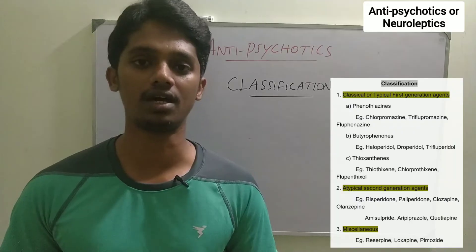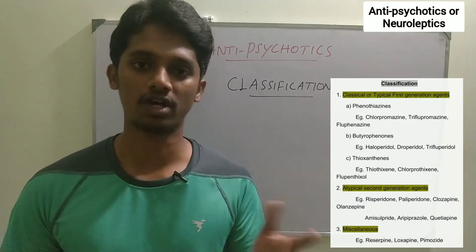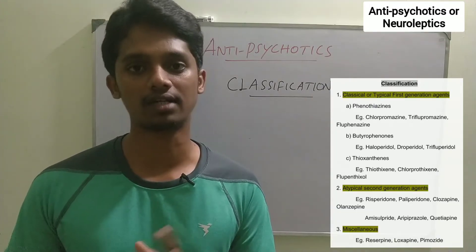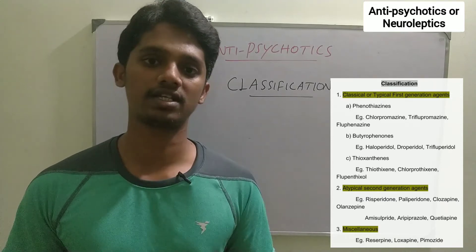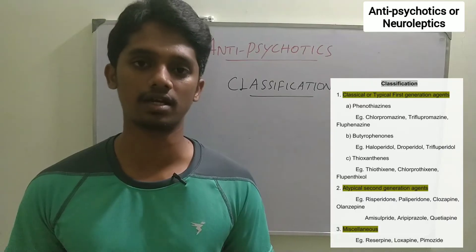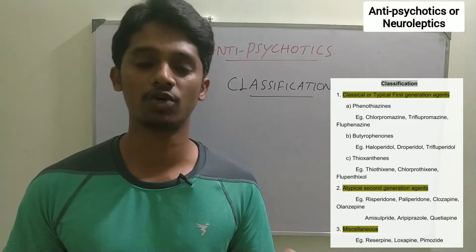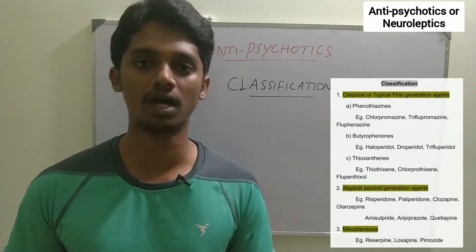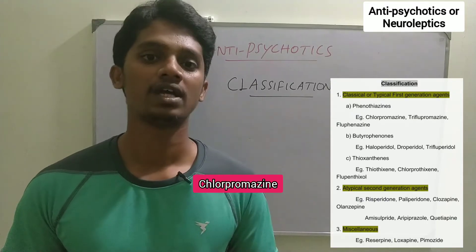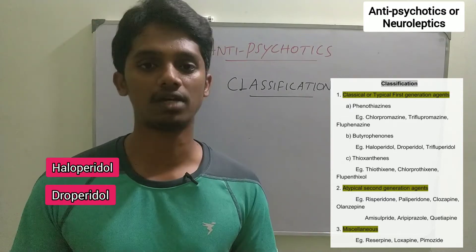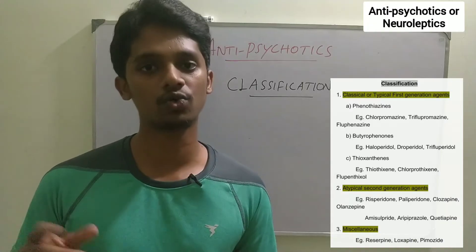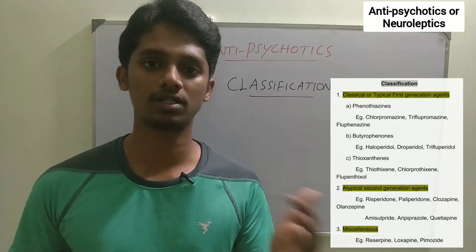First generation neuroleptics are classical or typical neuroleptics. In the first generation, there are categories like Phenothiazines, Butyrophenones, and Thioxanthines. The main drug in the Phenothiazine group is Chlorpromazine, which has been used to treat psychosis. In the Butyrophenone group, there is Haloperidol, Droperidol, and Penfluridol. In these drugs, the Dopamine D2 receptor is the main antagonist.